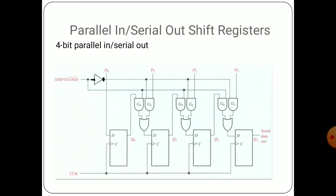This is the four bit parallel in serial out shift register diagram. Here one concept is there — that is shift and load operation. In this type of shift register, first we have to load the data and then after that we need to shift the data. So it has been divided into two operations: one is loading of data, and after loading is over, shifting can be done. So there are two modes — load mode and shift mode.